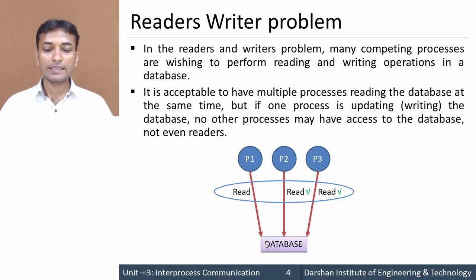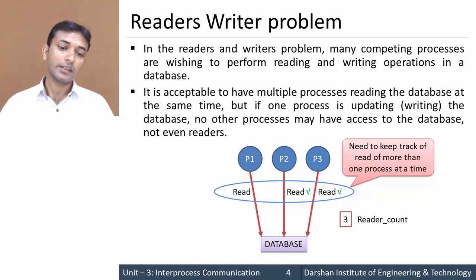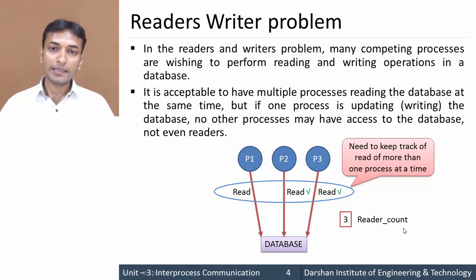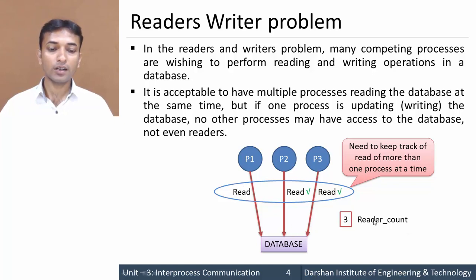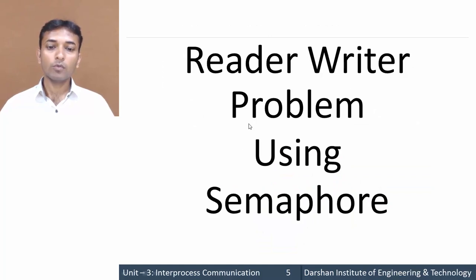So we conclude that we can allow more than one process to access our database in reading mode. All three processes can access the database in reading mode. But in such a case, we need to keep track of the number of processes reading the database — that is the reader_count variable. Right now there are three processes reading, so the value of reader_count is three. This is the reader-writer problem.